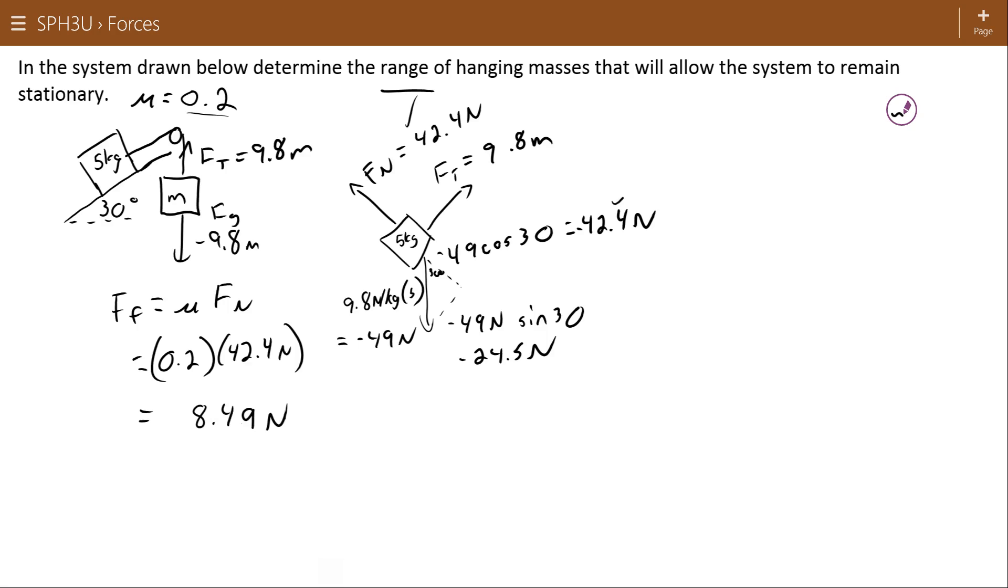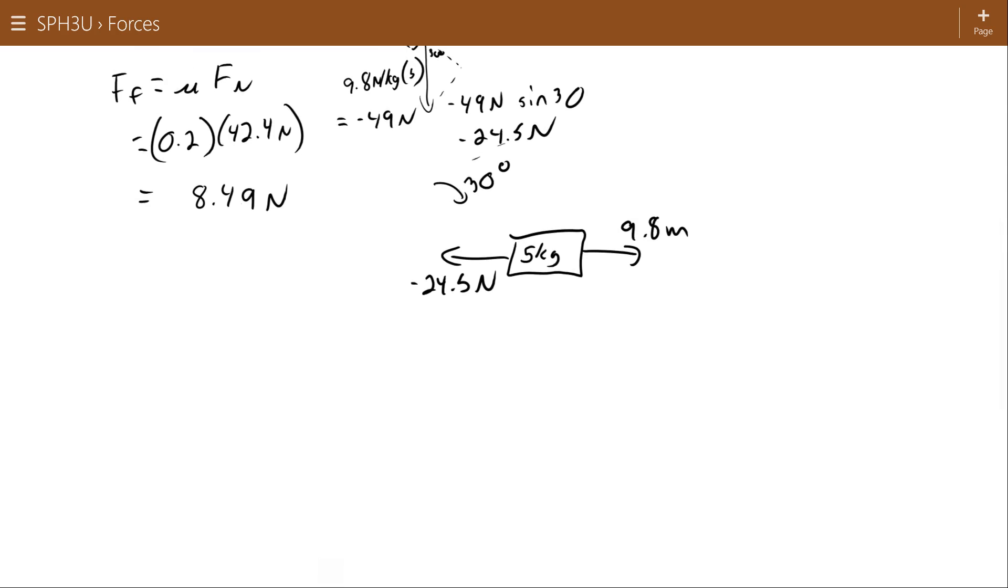So this force and this force cancel each other out. This force is pulling up, this force is pulling down, and this force could be pulling in either direction. I'm going to redraw my diagram to make it simpler. I've flattened out my incline, so I've rotated everything by 30 degrees. Now my force of gravity down the plane of negative 24.5 is facing this direction. 9.8m is pulling up in this direction.